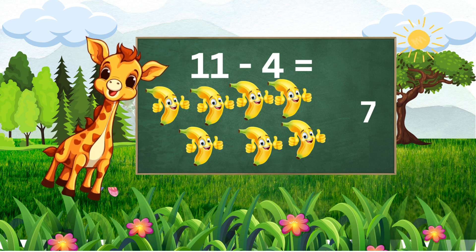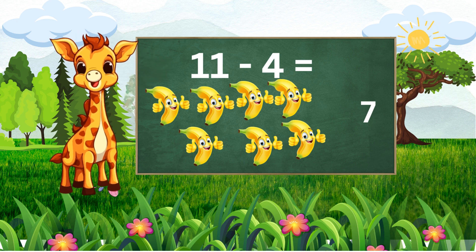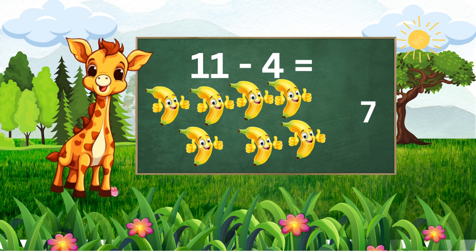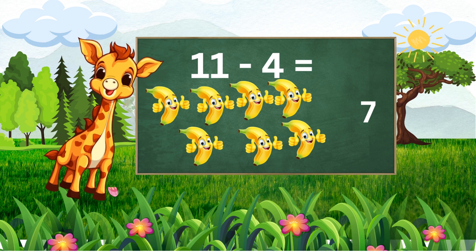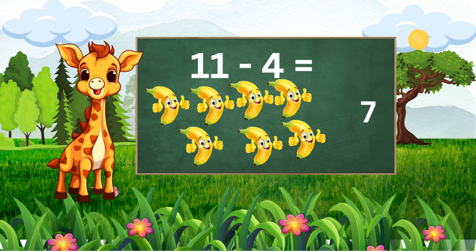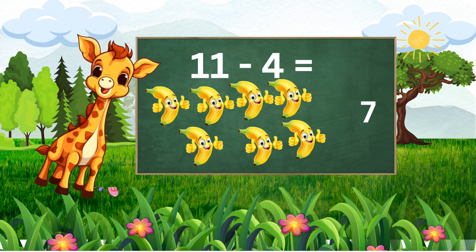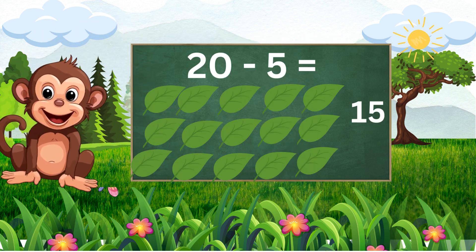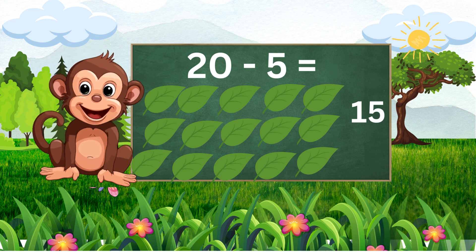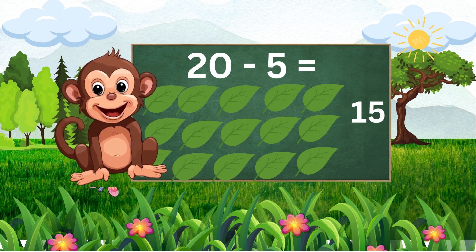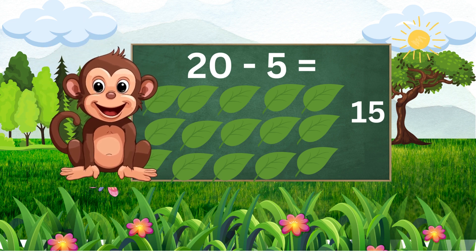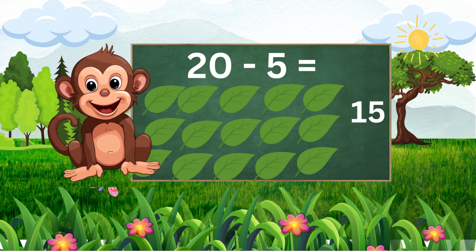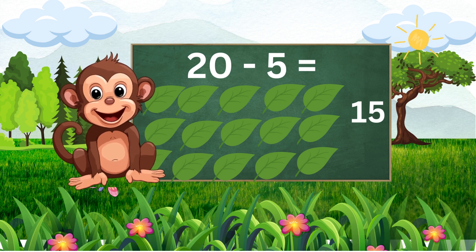Now let's make it a bit trickier. If we have 20 leaves and lost five leaves, how many leaves do we have in total? I know this one — we have 15 leaves. Well done, monkey. 20 leaves minus five leaves equals 15 leaves.